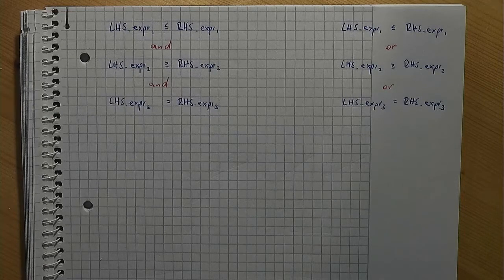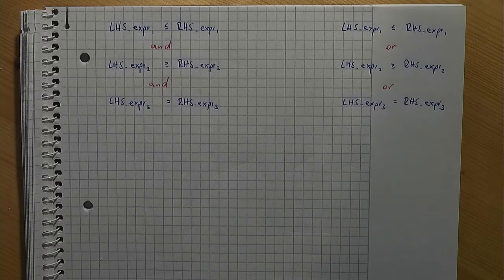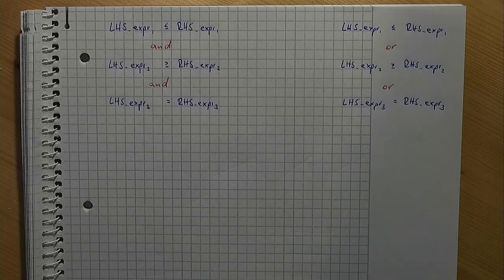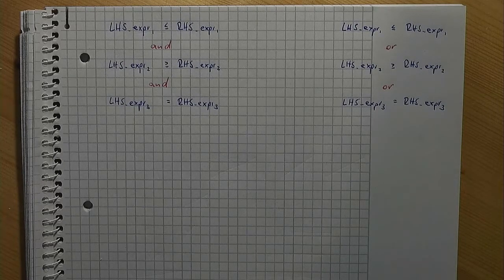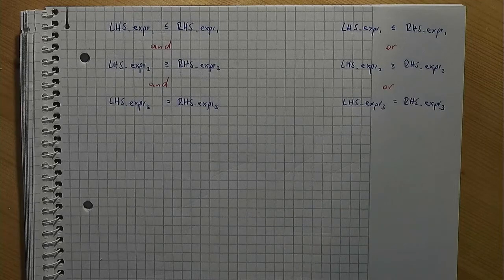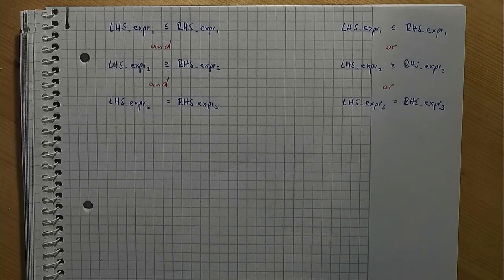In a previous video on soft constraints, we have seen how this works in principle. We simply add new, real-valued decision variables to the right-hand sides in the following manner.